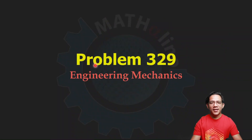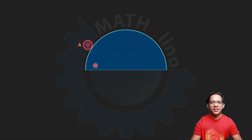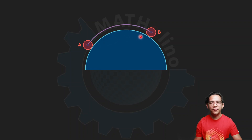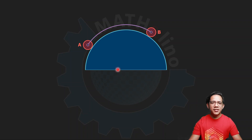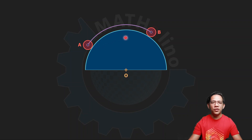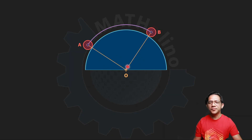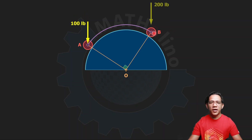We have these two cylinders, cylinder A and cylinder B, connected by a rigid rod that is parallel to this cylindrical surface that is smooth — meaning there is no friction at the contact surface at A and at B between the smooth surface and the two small cylinders. This cylinder weighs 100 pounds and this one weighs 200 pounds.